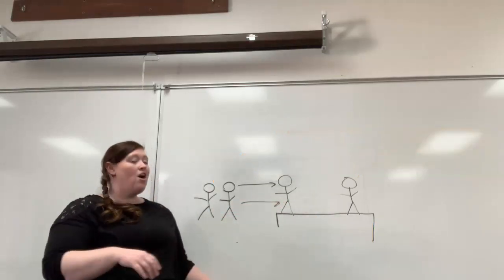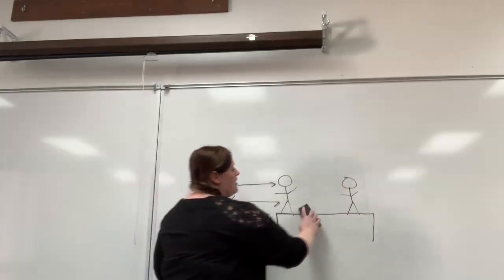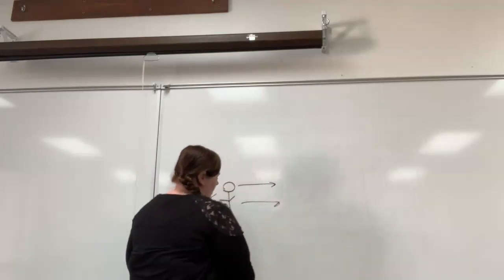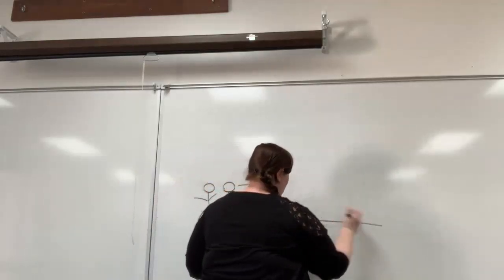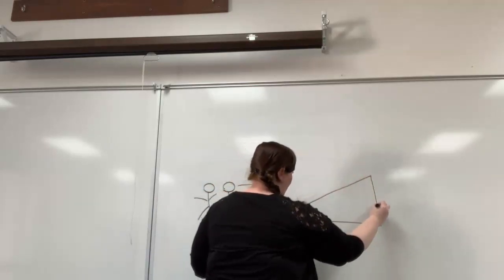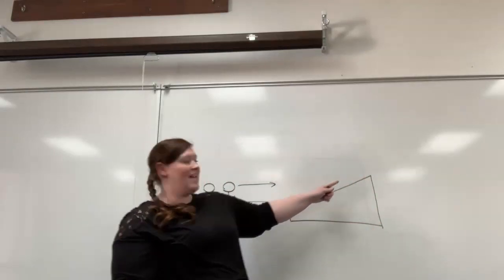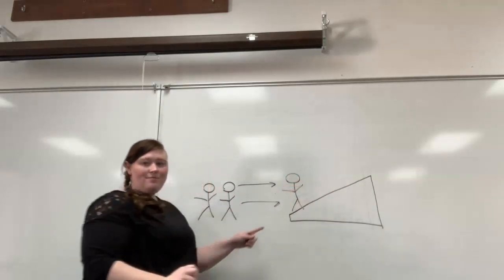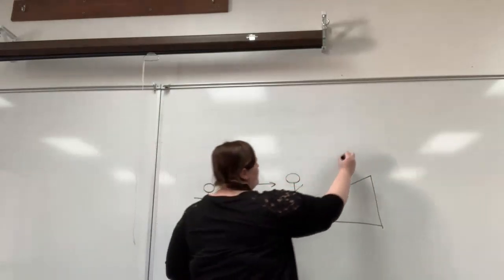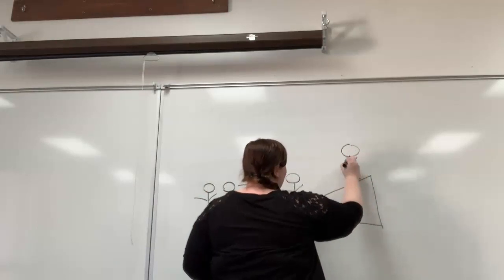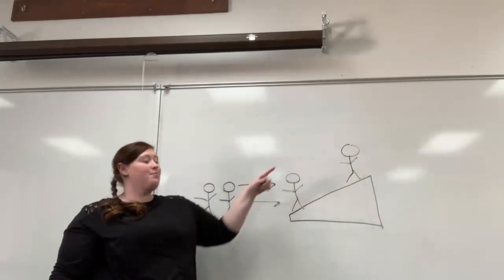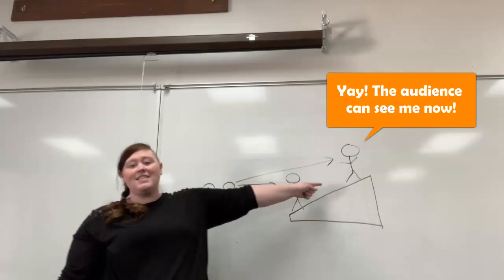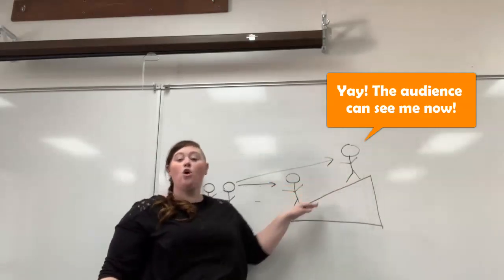So theatre building architects built the stages raked - at an angle - so that the person closest to the audience did not block the view of the person who was further away from the audience. The audience could see both people because the floor was raked.